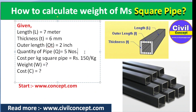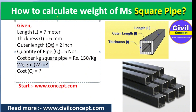We have a quantity of 5 MS pipes. The cost per kg of square pipe is 150 rupees — this depends on your area, so you can adjust it accordingly. Now we have to calculate the total weight of a single MS pipe and all 5 MS pipes, along with the cost.